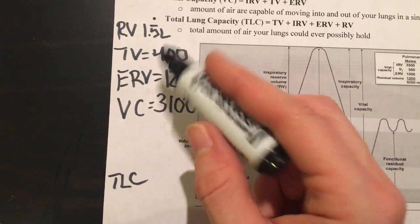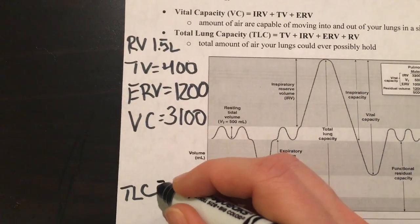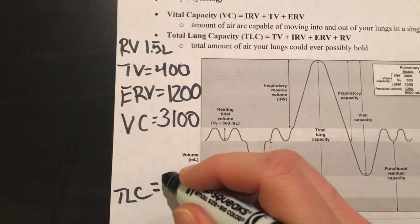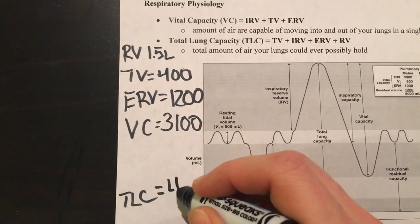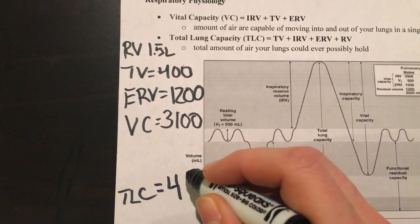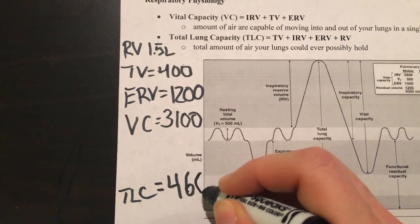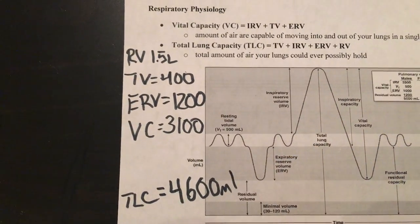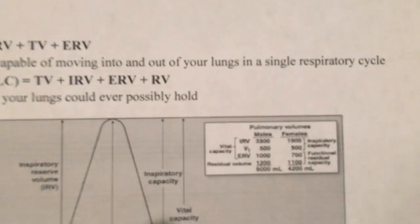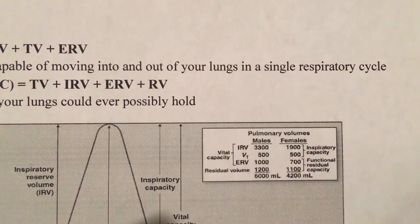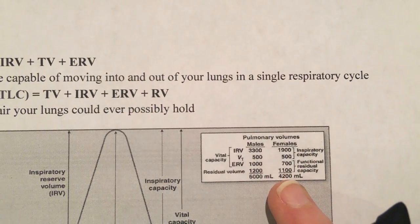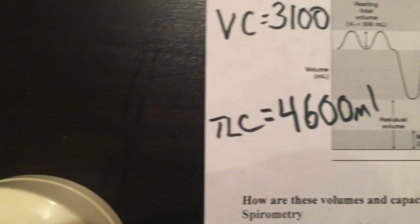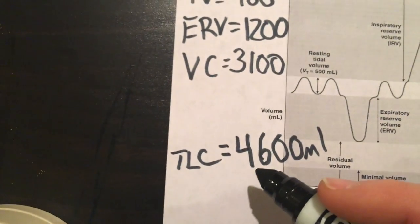This is in liters, but if you want it in milliliters, it's 1,500 for me. It's going to be 3,100 plus 1.5 is going to be 4,600 milliliters. Let's see how that compares to average. Total lung capacity for females: 4,200. Hey, I'm doing pretty good. So total lung capacity.